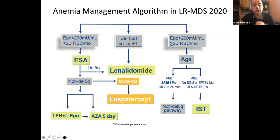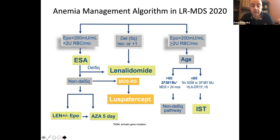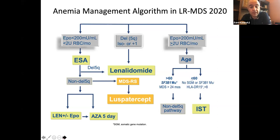Focusing more on lower risk disease — in most cases we are treating anemia. Unfortunately, patients eventually become anemic and need blood transfusions sometimes weekly or every other week. Many of the treatments we try in the lower risk are really to alleviate the anemia, though every now and then we will be treating for low platelets or low neutrophils.